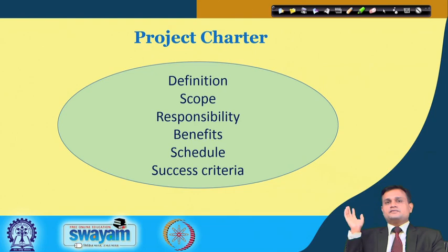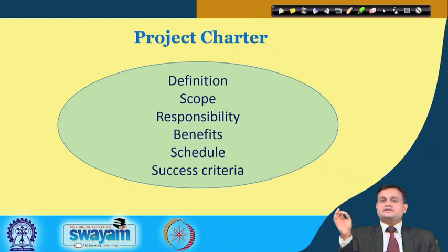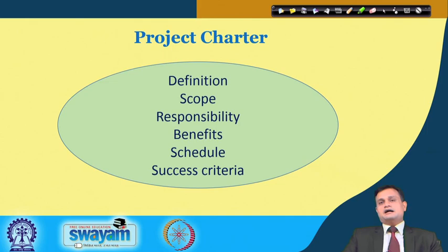Project charter in a nutshell covers the definition of the project, defining scope and boundary, responsibility — who will be responsible for what and how they will be facilitated — the benefits this project will deliver, the schedule where you can identify the critical path and apply selective control as discussed in the activity network diagram, and finally the success criteria.